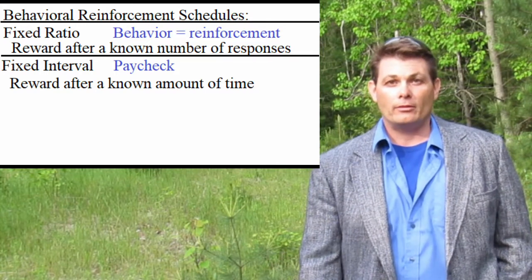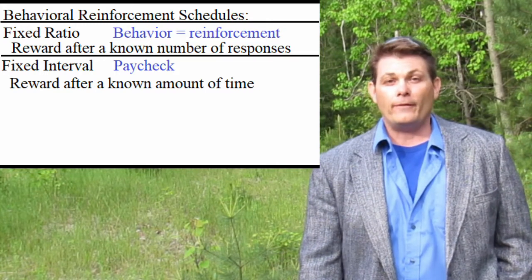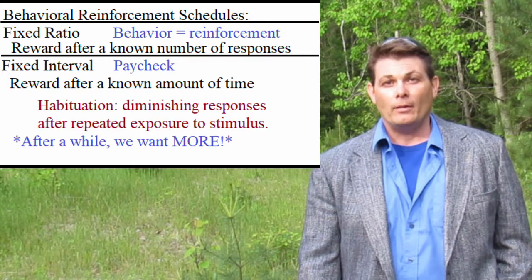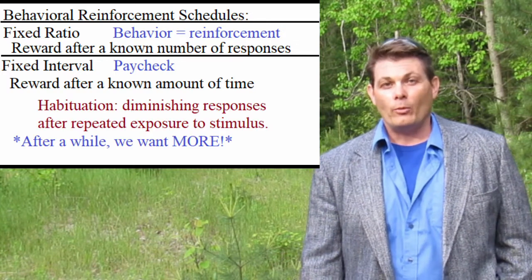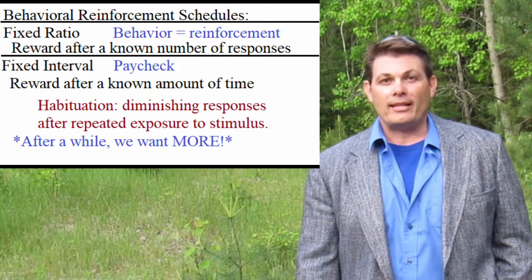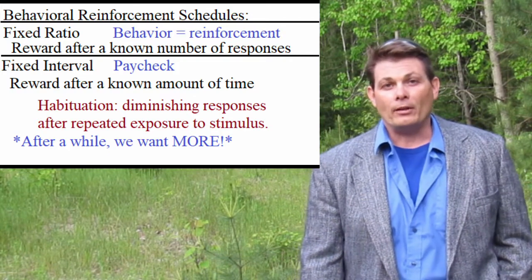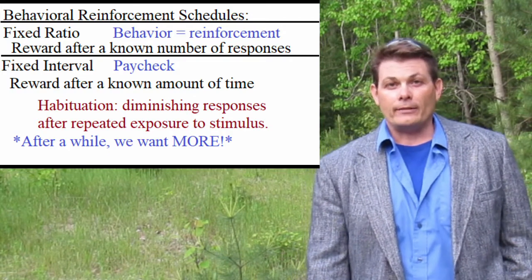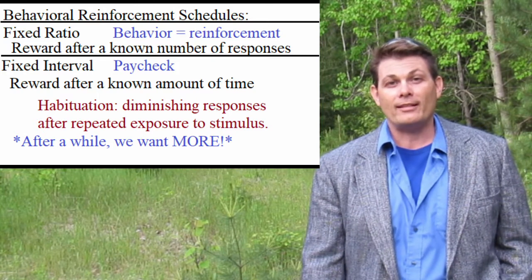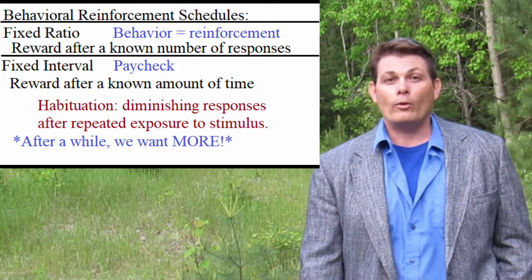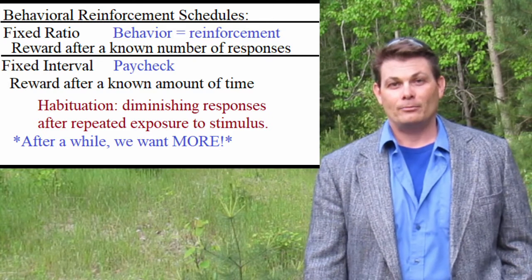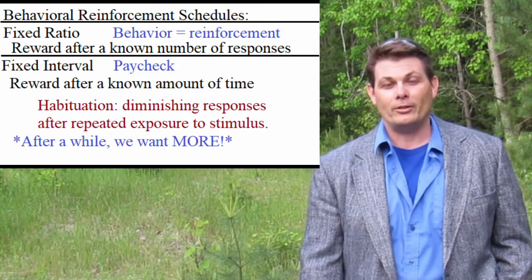The problem with fixed ratios and fixed intervals is that people tend to get used to them. There's a thing called habituation — after a while, the person gets used to getting a certain reward. For example, on a fixed interval system, if you get a paycheck every two weeks and you've gotten the same paycheck for the last 10 years, you're going to want a bigger paycheck, probably, unless you really love what you're doing.